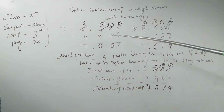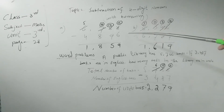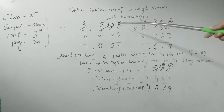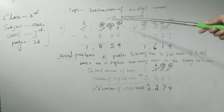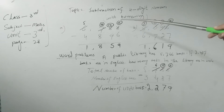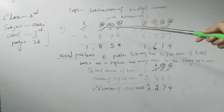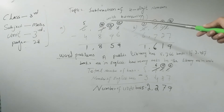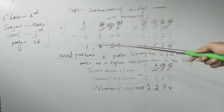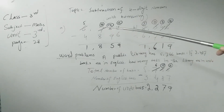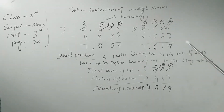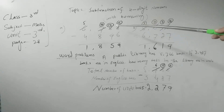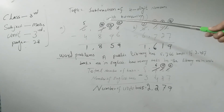The first question is 6755 minus 4896. Six minus nine — we need to borrow, so 16 minus 8 is 8. Then using borrowing: 15 minus 9 gives us the result. 10 plus 5 is 15, 10 plus 4 is 14, 10 plus 6 is 16.